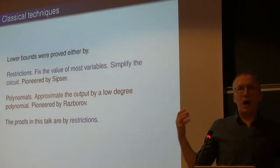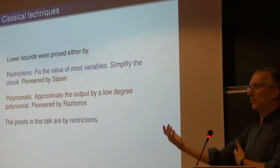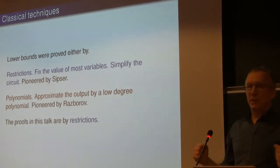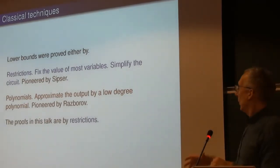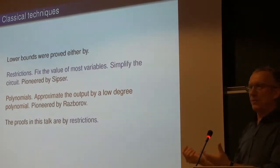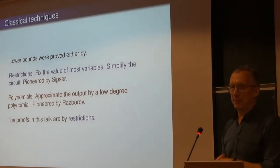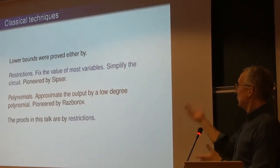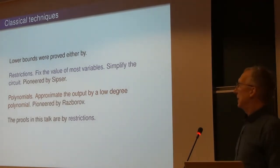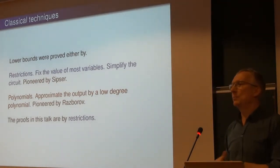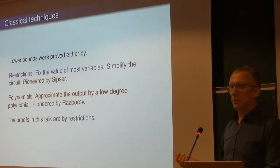How do we actually prove lower bounds? Broadly there are two ways. One is restrictions: you fix the values of many inputs and see what happens — pioneered by Sipser in the early 80s, around 1982-83. The other uses polynomials: whatever is computed by a small depth circuit is well approximated by a low-degree polynomial — pioneered by Razborov. We're going to focus on restrictions.